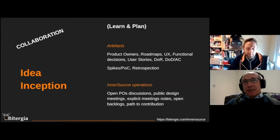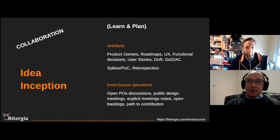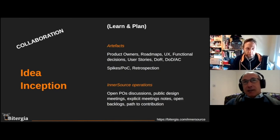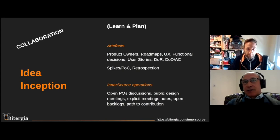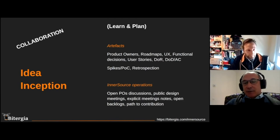In the first phase, it covers the learning process and planning. We will see classical artifacts like product owners, roadmaps, and functional decisions. At the operating level, InnerSource will bring things like open discussions, public design, explicit notes and reflection, and open backlogs — everything open and with a clear path to contribution. These are the typical things that would provide an InnerSource flavor to this phase.